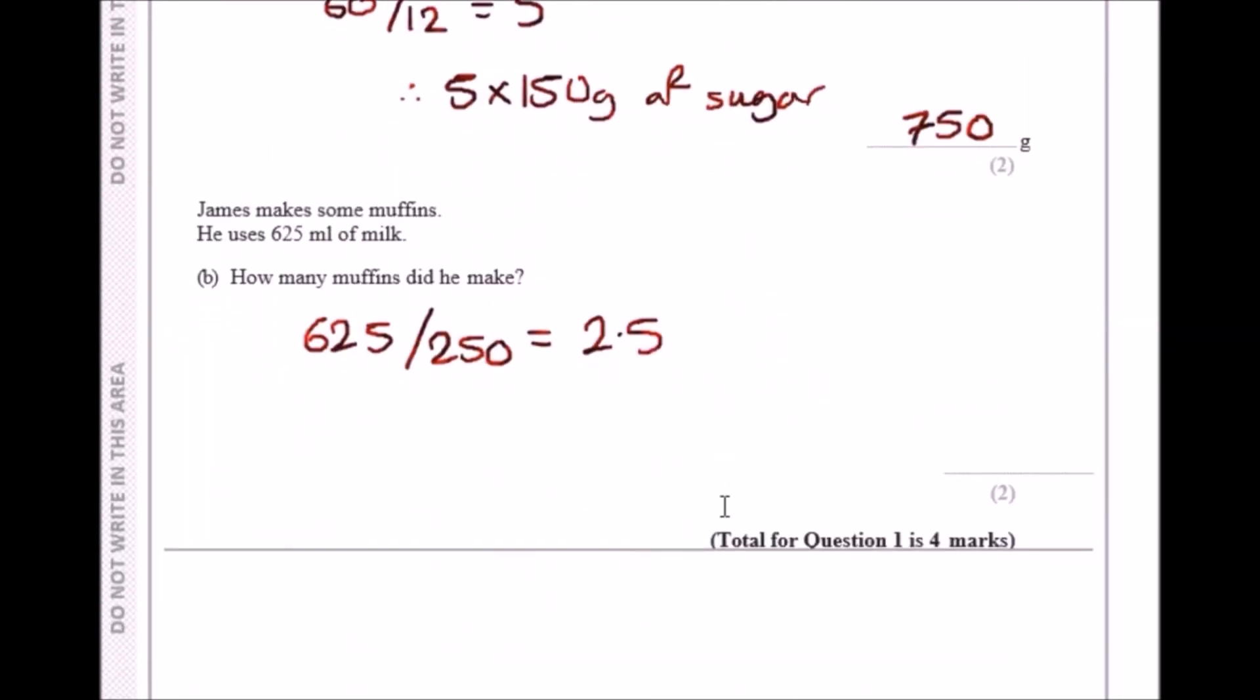We can say 12 times 2.5. This should give us about 30 muffins. Just like the previous question, you need to multiply everything by 2.5 if you want to make 30 muffins.